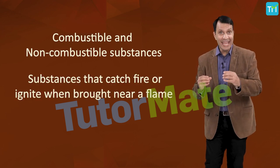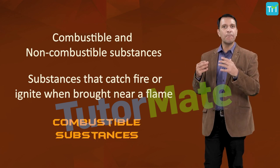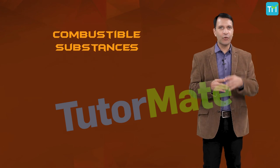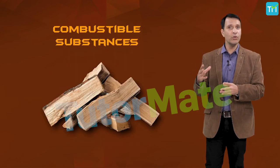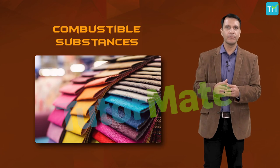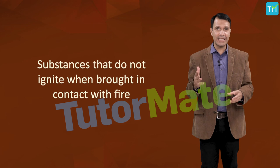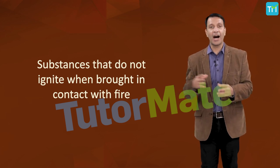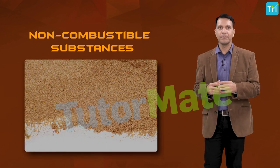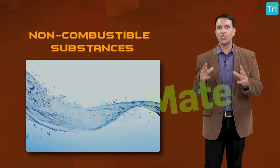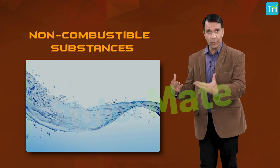Combustible and non-combustible substances: substances that catch fire or ignite when brought near a flame are called combustible substances — for example, paper, kerosene, wood, and fabric. On the other hand, substances that do not ignite when brought in contact with fire are non-combustible substances, sand and water being the most common examples. That is why they are used to extinguish fire.